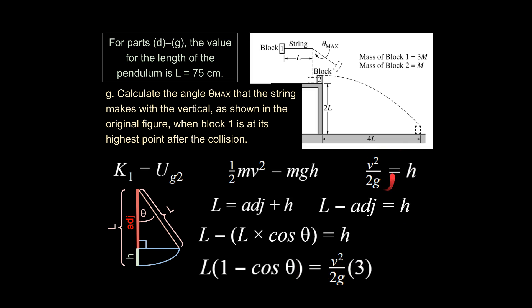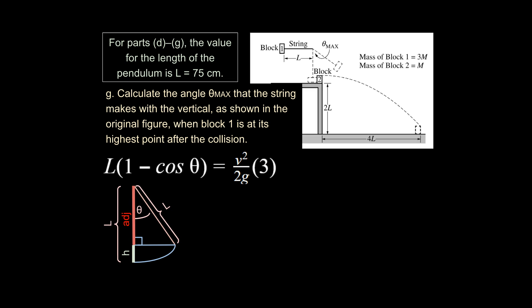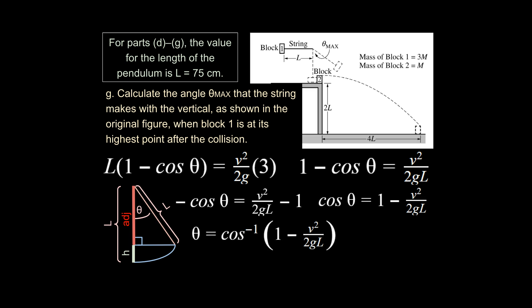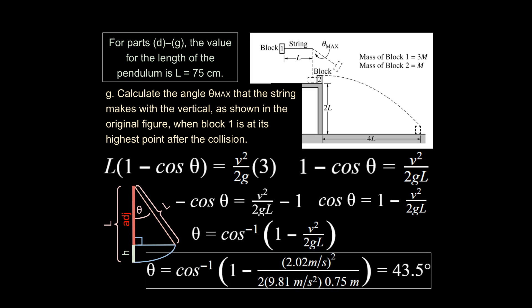Substituting h = L(1 − cos θ) into our energy equation, we isolate for θ. Rearranging and taking the inverse cosine of both sides, we plug in all known values and get θ_max = 43.5 degrees.